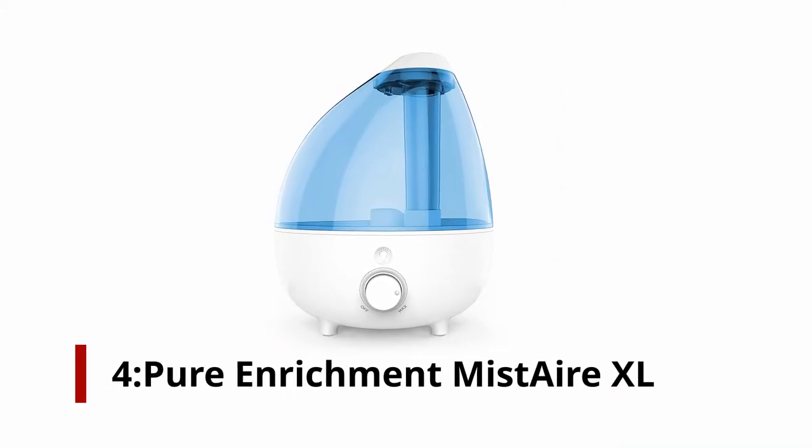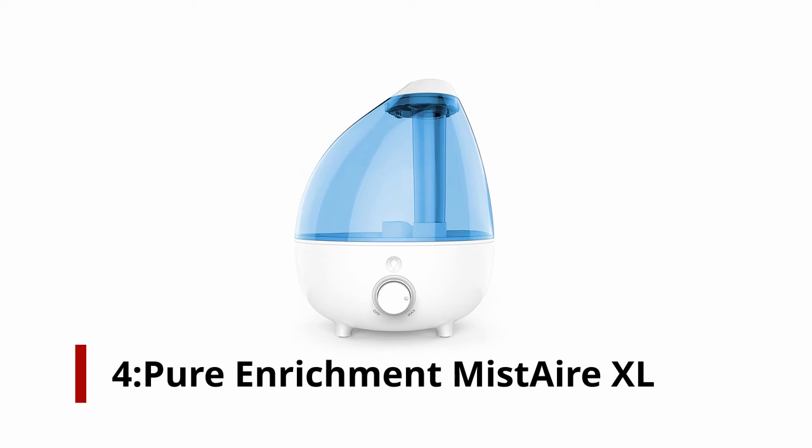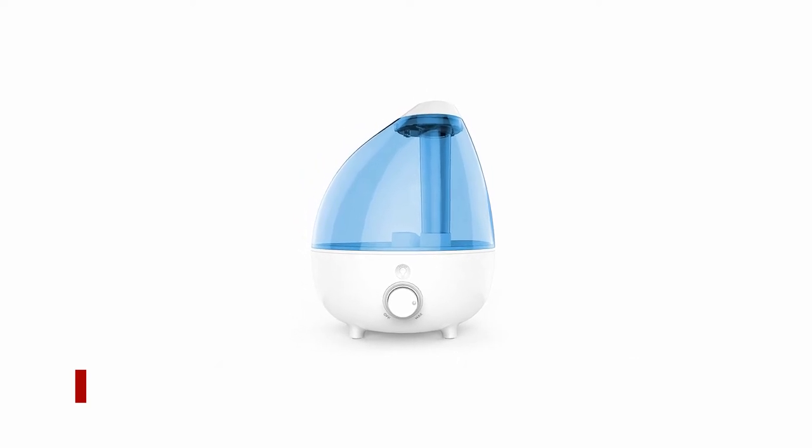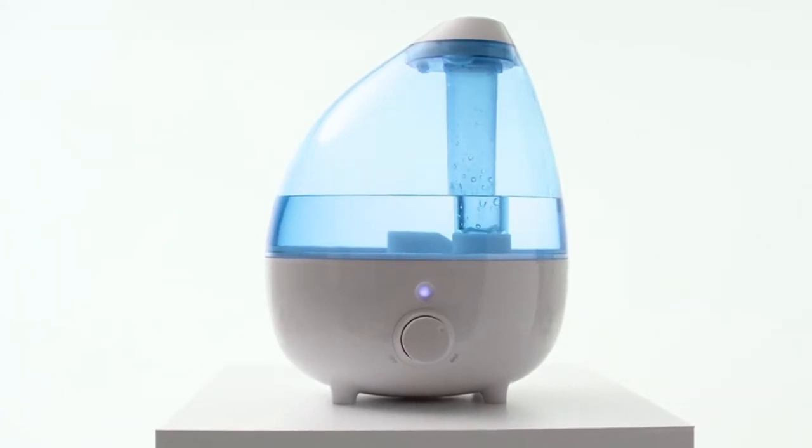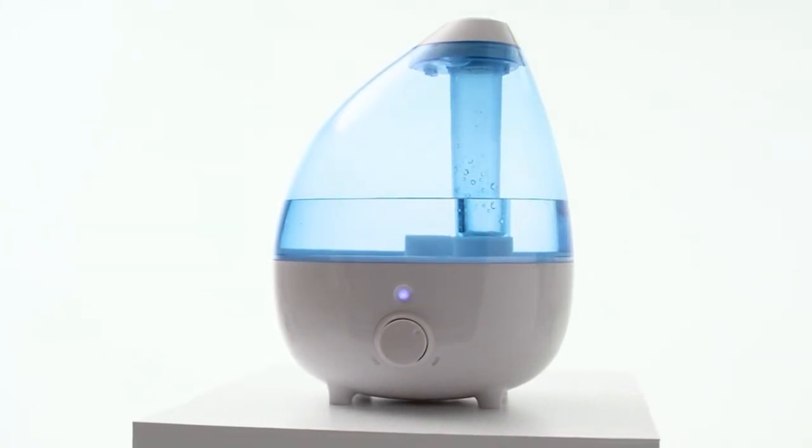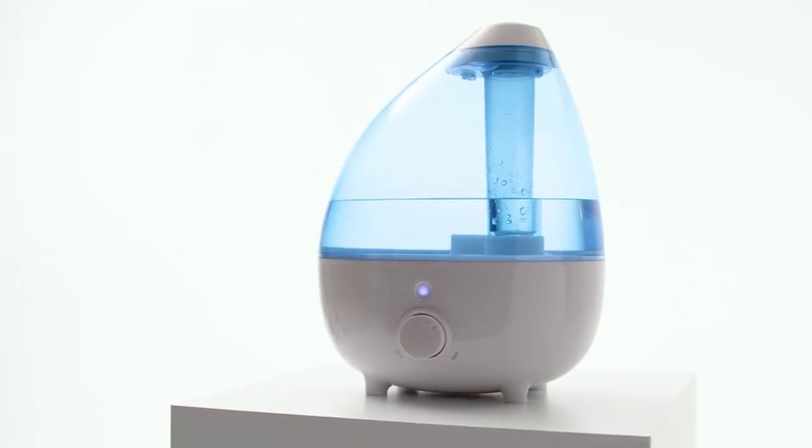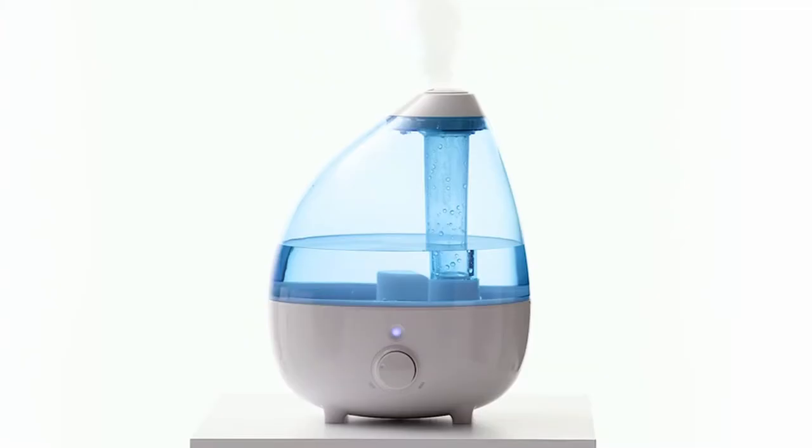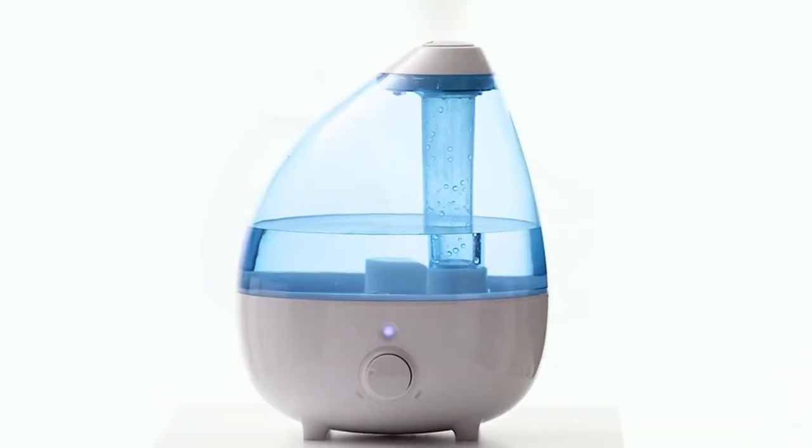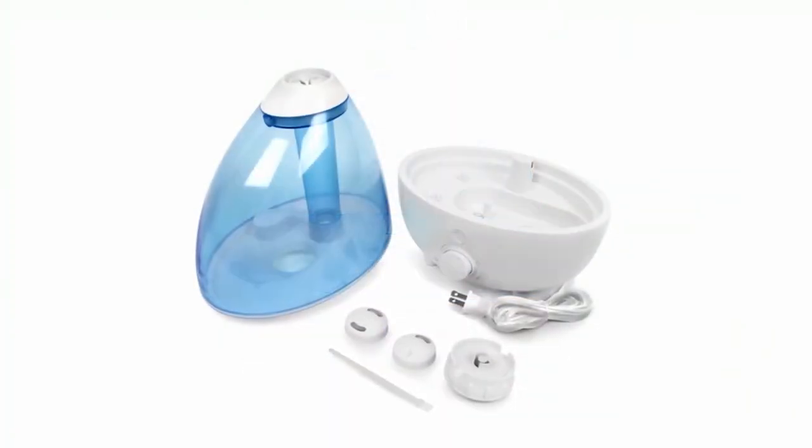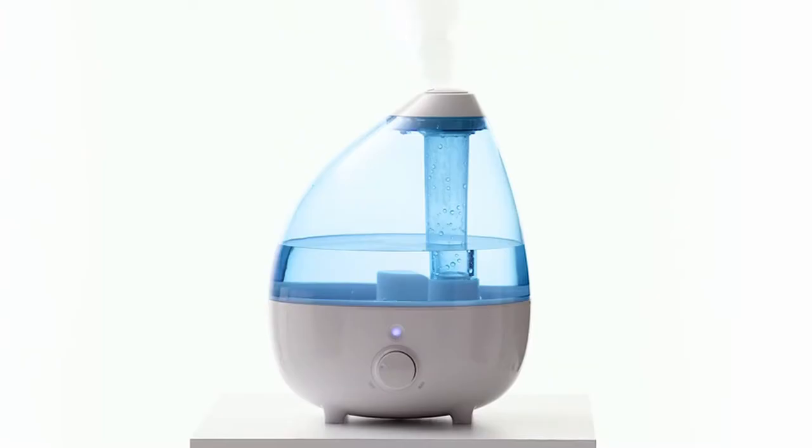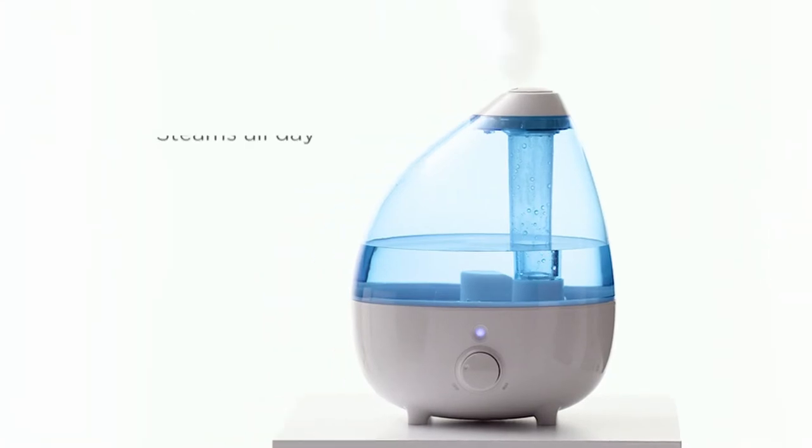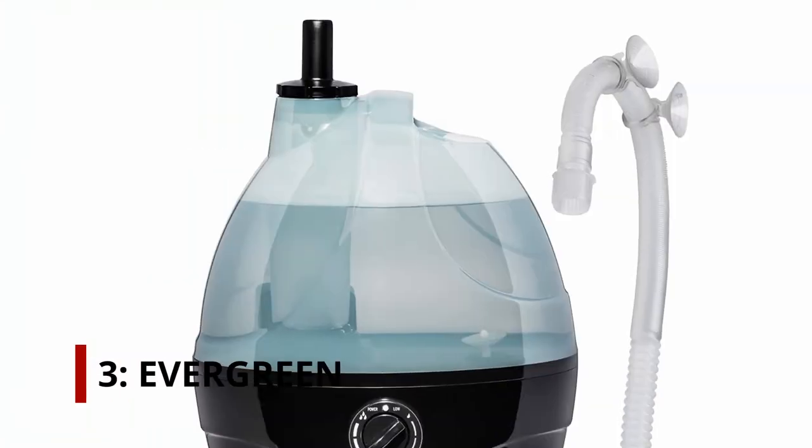On number four: Pure Enrichment MistAire XL ultrasonic cool mist humidifier for large rooms, one gallon water tank. In comparison with most of its competitors, this model has an extended warranty. This device has a five-year warranty. In addition, the MistAire XL has different mist sizes, a one-gallon tank that holds plenty of water, and an automatic shutoff. However, it can also be used as a night light if you want it to. You will be illuminated by either a soothing blue or green light, or a warming red light that gives you just enough light to see.